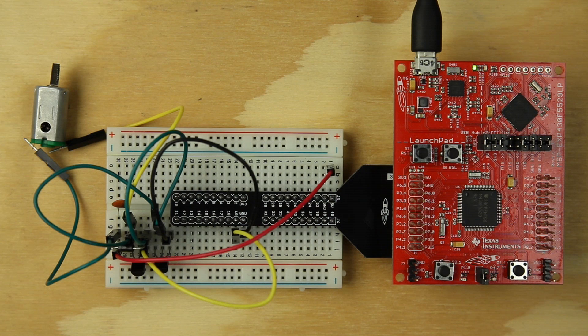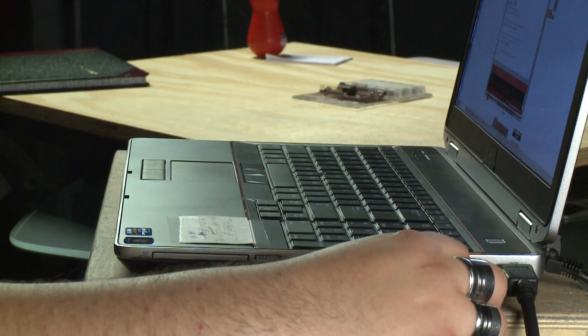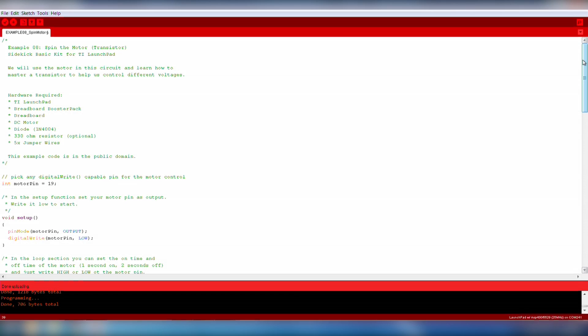Now let's get started with the software. First, plug your Launchpad to your computer over USB. Now open up Example 8 from the Sidekick code examples.